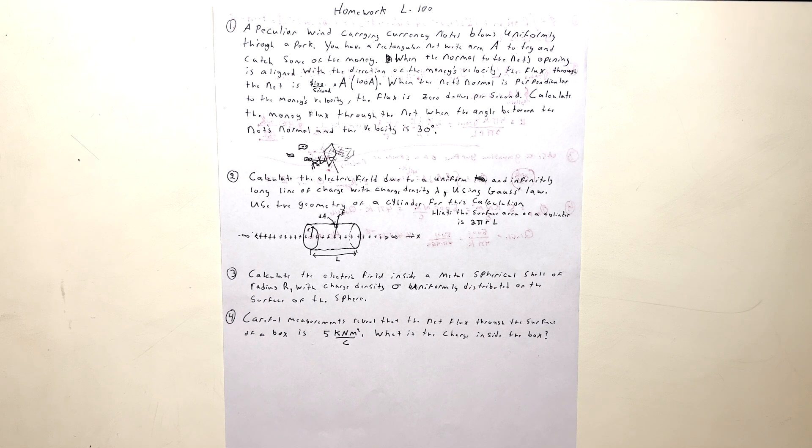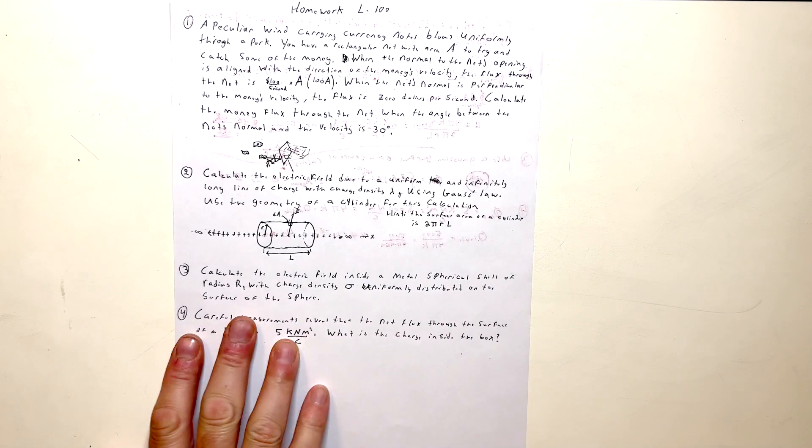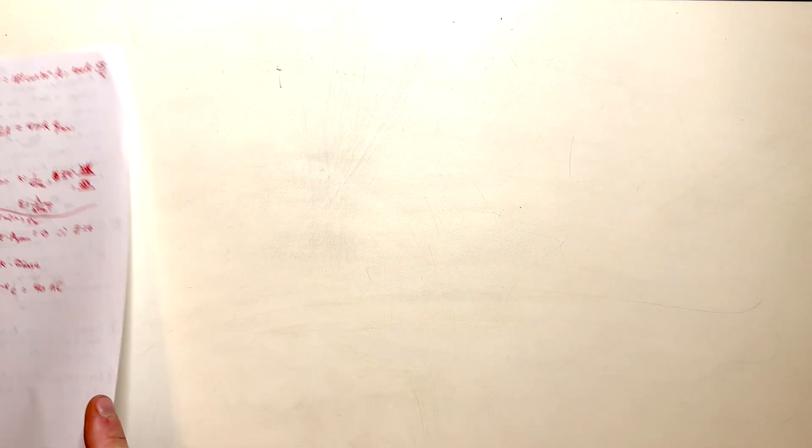All right. Number four. Careful measurements reveal that the net flux through the surface of a box is five kilonewtons meters squared per coulomb. What is the charge inside the box? It doesn't matter what the shape of the box is.